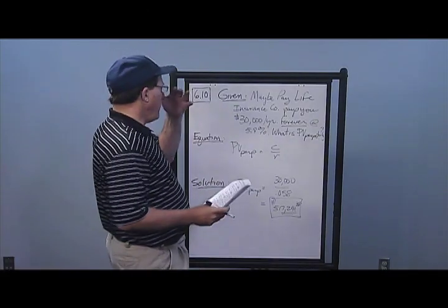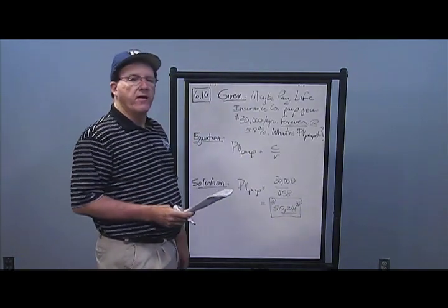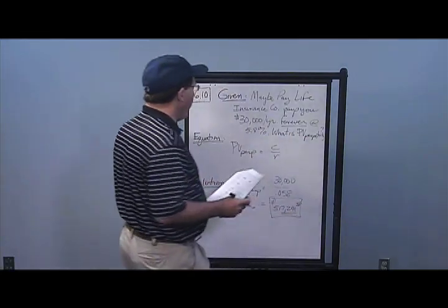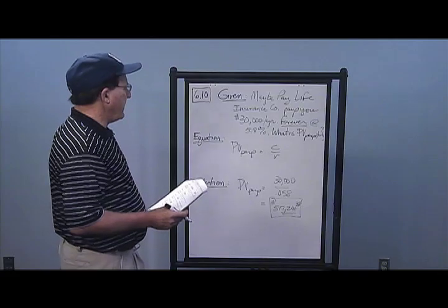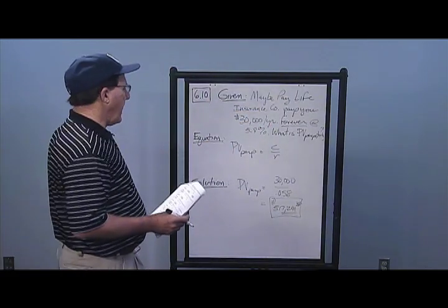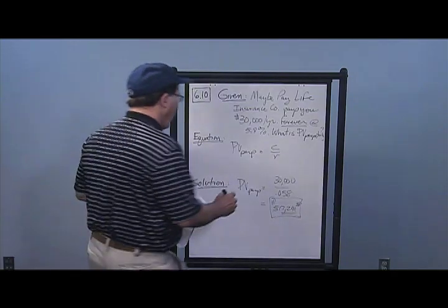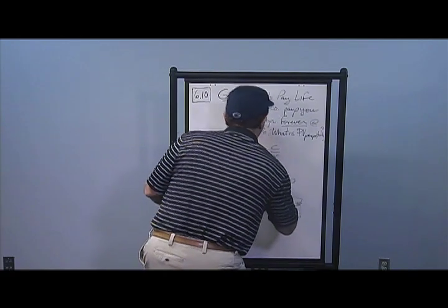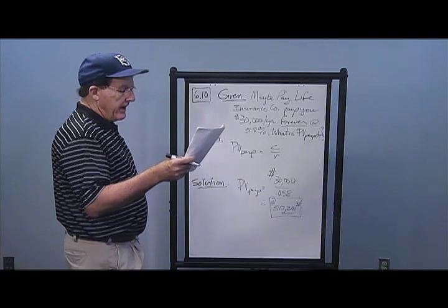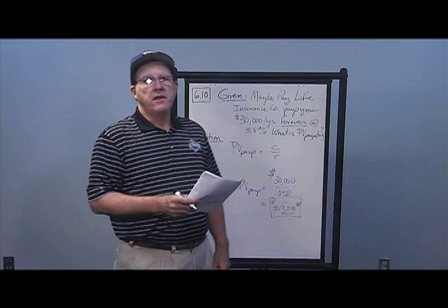In Problem 10, an insurance company pays you $30,000 a year forever. When we see the word forever, we think present value of perpetuity. The equation is PV of perpetuity equals C over R. $30,000 divided by 0.058 gives a policy value of $517,241.38.